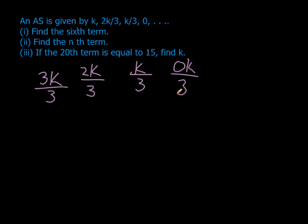Pause the video if you're not exactly sure where I got it. Now we can recognize what's going to happen if I take term 2 and subtract that term. 2k divided by 3 minus 3k divided by 3 gives me negative k, negative 1k divided by 3.